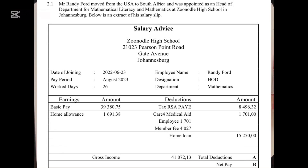For deductions, we have tax, medical aid, and home loan. The value of A is the total deduction — we just add the three amounts to find the value of A. The value of B is our net pay. We know that net pay is salary after deduction, so we say gross minus total deductions to find the value of B.